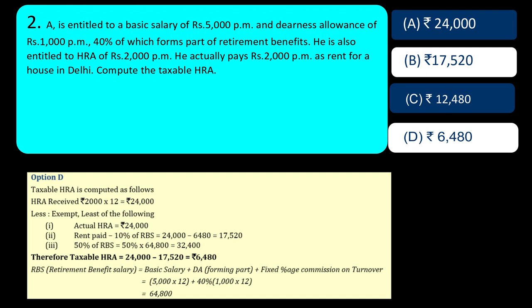Rs. 17,520 is exempt from the HRA received. You received Rs. 24,000, Rs. 17,520 is exempt, so what remains is Rs. 6,480. This is your taxable HRA — that is your answer.